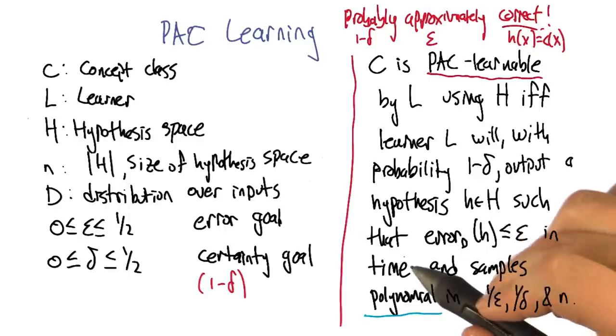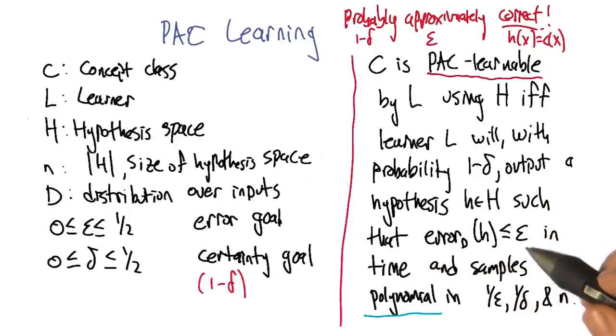And it needs to be the case that the time that it takes to do this and the number of samples that it needs draws from this distribution D is relatively small. In fact, bounded by a polynomial in one over epsilon, one over delta, and the size of the hypothesis space N.